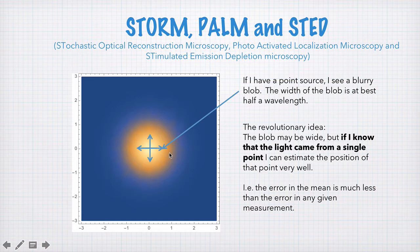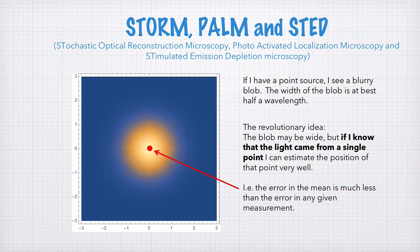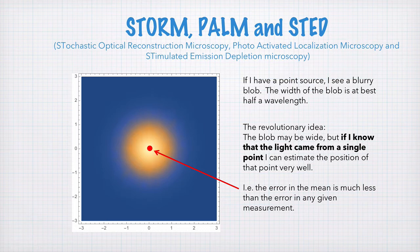The revolutionary idea is that the blob may be wide, but if I know the light did come from a single point, I can estimate the position of that point very, very well. In other words, the error in the mean is much less than the error in any given single measurement. If I take many, many measurements and build up a distribution, I can say where the center of that distribution is, and from that estimate exactly where my point source is — much better than the diffraction limit.